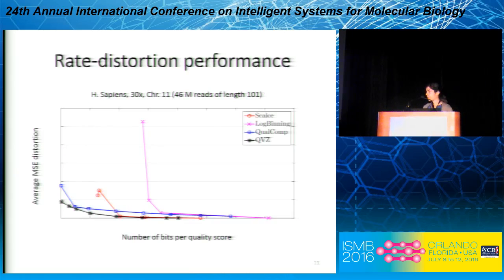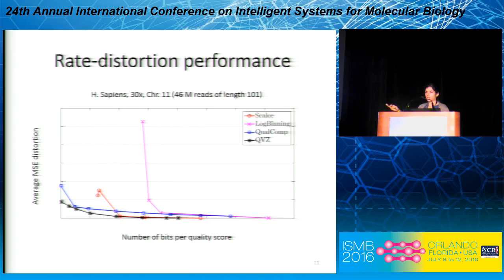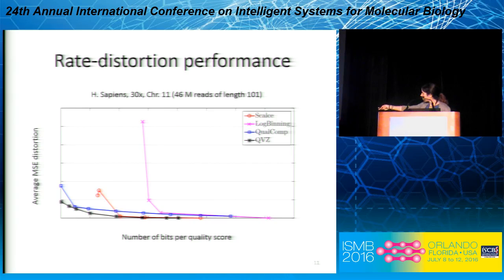What is the performance of the algorithm? I plot the average mean squared error versus the number of bits per quality score, with the performance of QVC shown in black. The other colors indicate the performance of previously proposed algorithms. As you can see, we are better in terms of rate-distortion performance for all rates — for small rates and for higher rates. We can also achieve lossless compression, and this lossless point is about two bits per quality score.